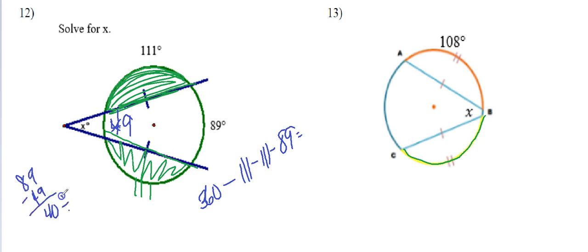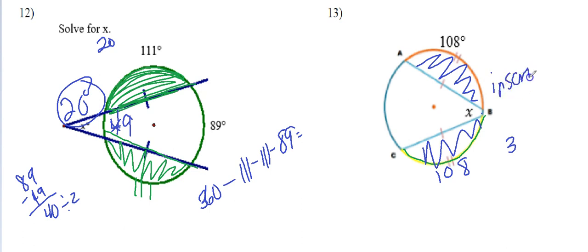For this one, same thing. Here's 108, here's 108, because those chords are the same. So this is inscribed. Okay, because this is inscribed, all I need now is this arc right here.